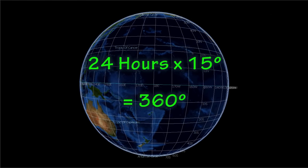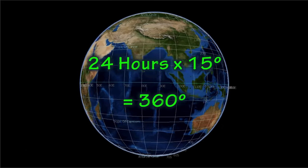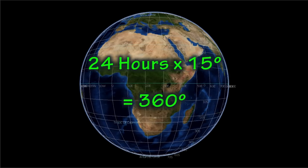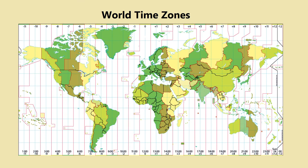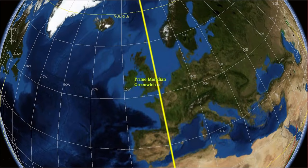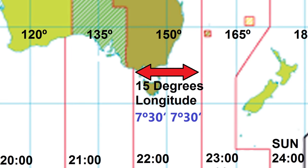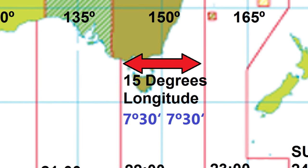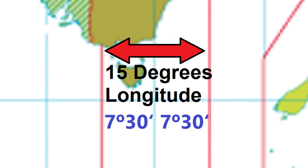Time zones are based on the fact that the earth moves 15 degrees longitude each hour. Since there are 24 hours in a day, there are 24 standard time zones. Time zones are counted from the prime meridian, which is zero degrees longitude. Each time zone is counted at 15 degree intervals and extends seven and a half degrees either side of the central meridian.